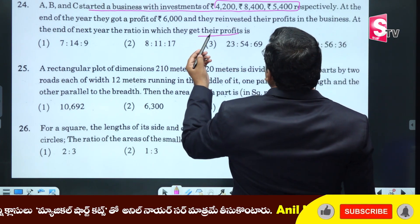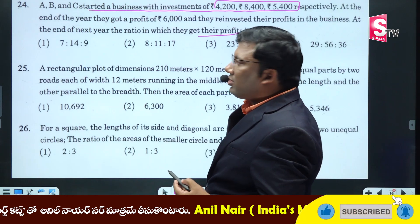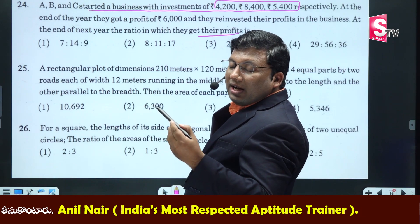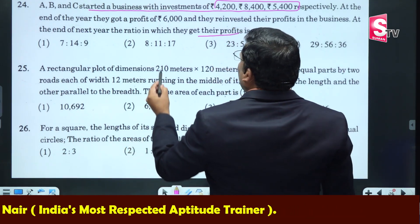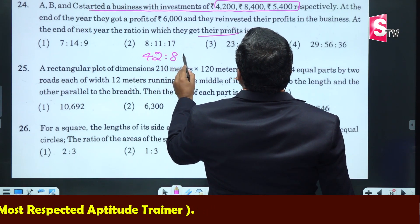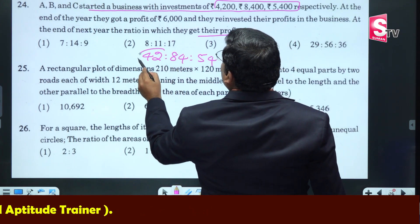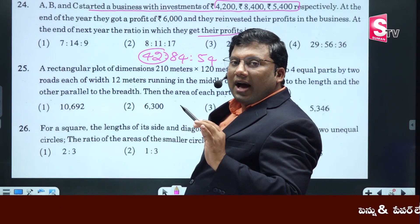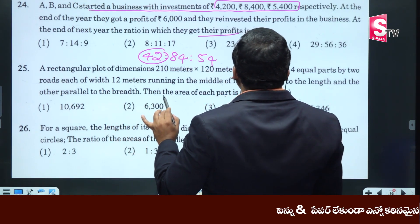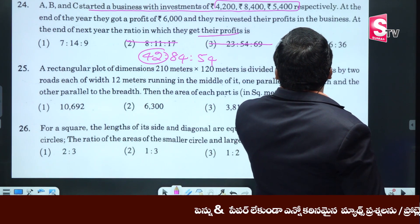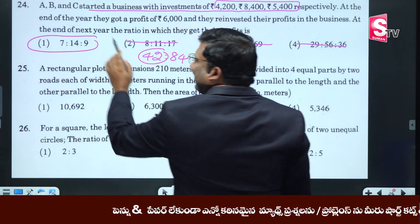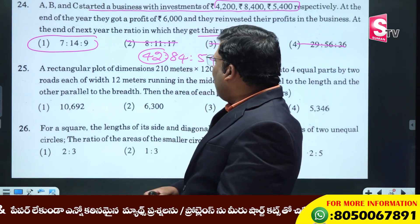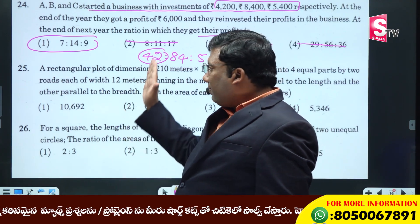What is the profit ratio? If you look at the profit ratio, the profit ratio equals the investment ratio when the time period is the same. The investment ratio is 42 to 84 to 54. Dividing by 7 gives 6 to 12 to something — simplifying: 7 to 14 to 9. You can simplify it further.